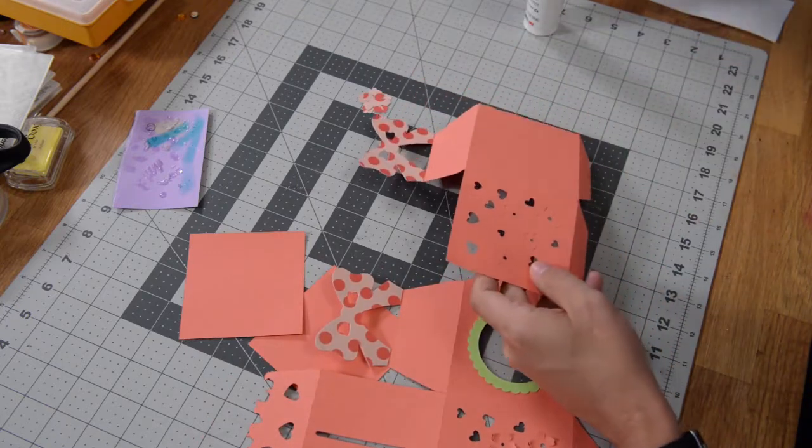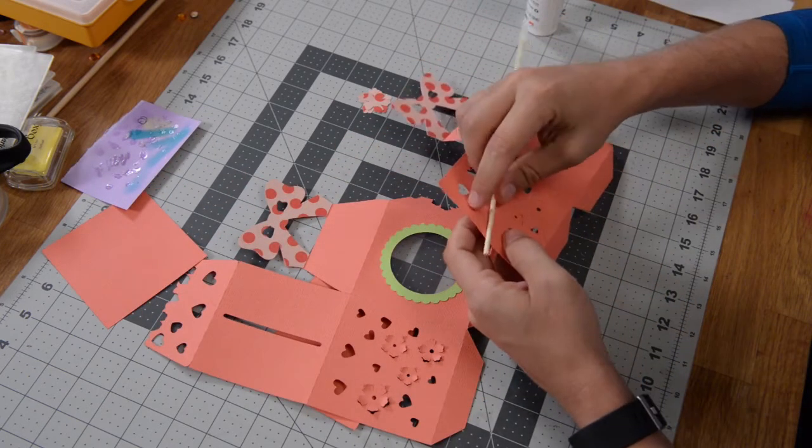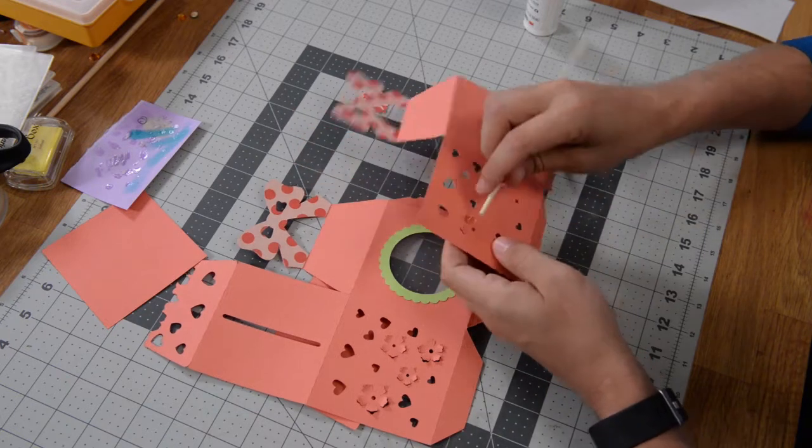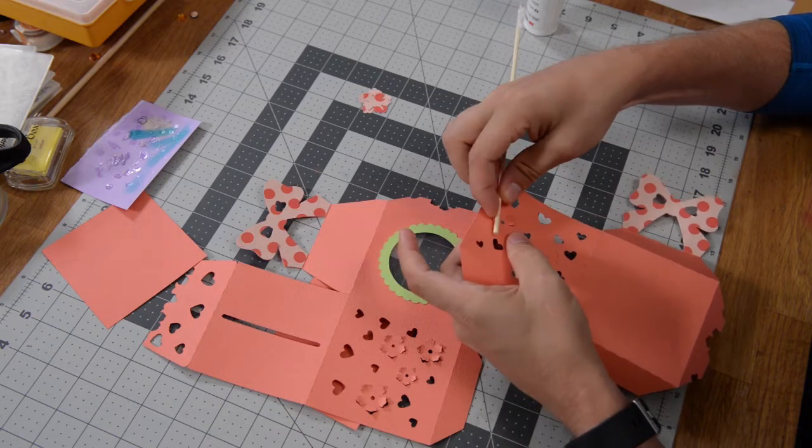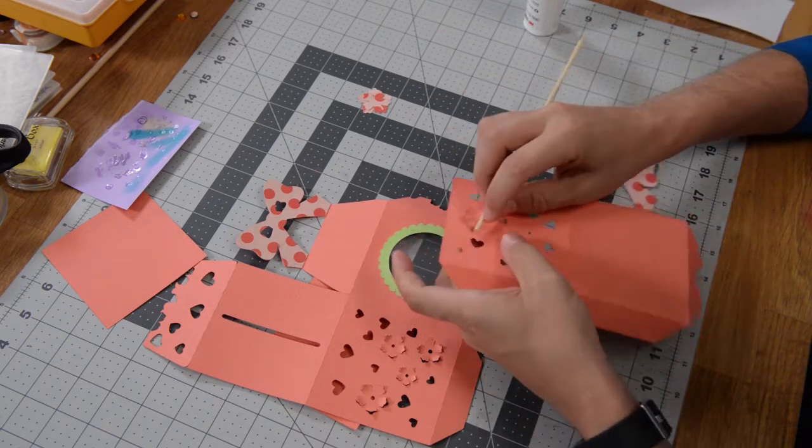one thing too, before we move on, you can see here on this side, I've taken these petals and I've curled them out. So that's all you want to do is just take like a little skewer and just push them out and just kind of wrap them around your little skewer just to kind of give this piece a little bit of dimension.